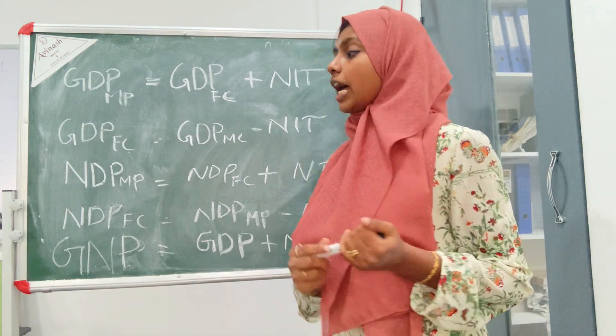Gross National Product — GNP — is related to Gross Domestic Product. What is GDP? It is the Gross Domestic Product. What is NFI — Net Factor Income? NFI is added to GDP to get GNP. What is GNP? Very simple — GDP plus NFI equals GNP.